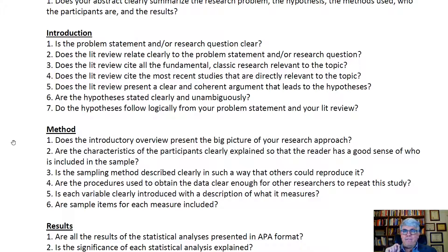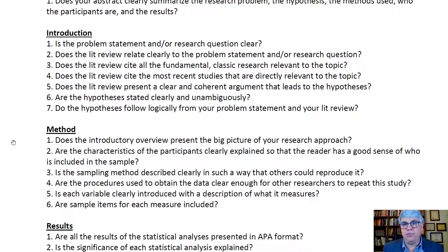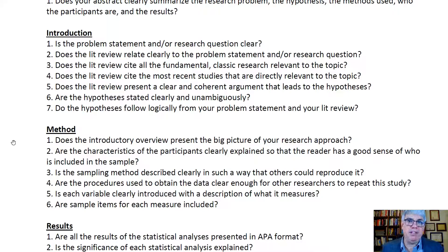Does the lit review cite all of the fundamental, classic research relevant to the topic? You don't want just new research — you want the defining research. If it's a construct defined in the 1970s, you'll want to cite the early papers that defined it. And does the lit review also cite the most recent studies directly relevant to the topic? Don't choose recent studies just because they have a recent date; they still have to be relevant. A good approach is one classic and one modern source dealing with the same topic.